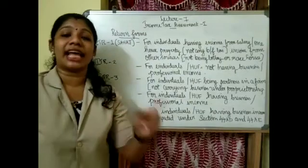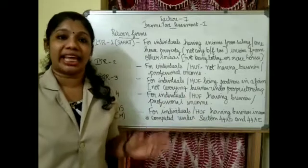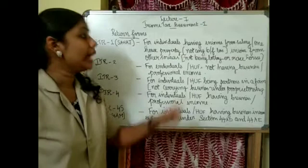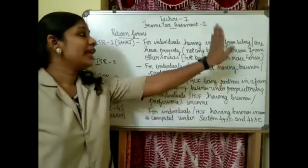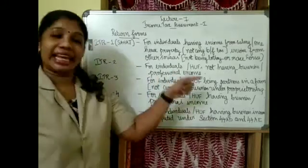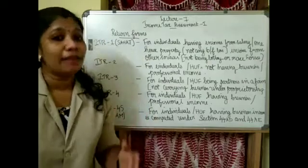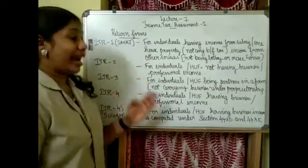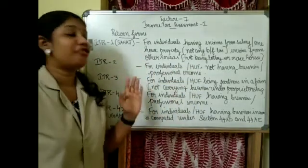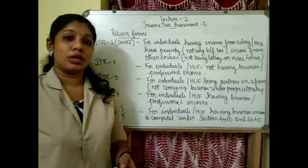Under ITR1, there must be only one house property and no brought forward loss. Income from other sources can include lottery income or racehorse income. However, ITR1 is applicable only for individuals not having any brought forward loss, and income from other sources should not be from lottery or racehorse. ITR1 is also known as SAHAJ.